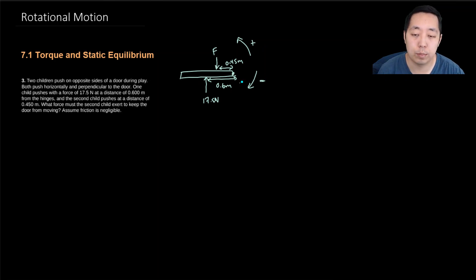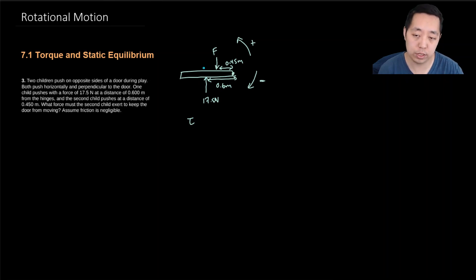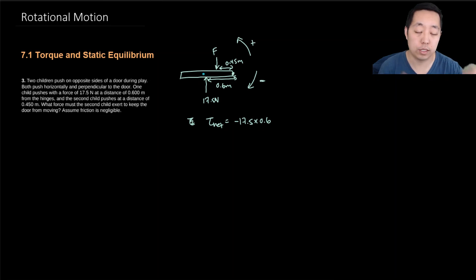Which way you declare positive is up to you as long as you're consistent. The 17.5 newton force causes a torque about the point of rotation. Torque equals the force times the distance from the point of rotation to where the force is applied. This force causes clockwise rotation, so this torque is negative: −17.5 × 0.6.